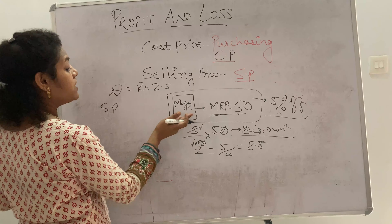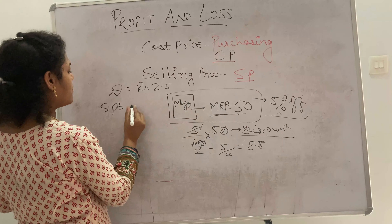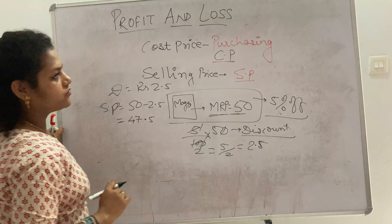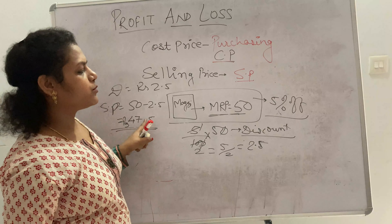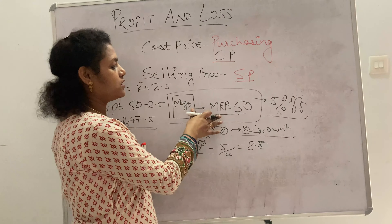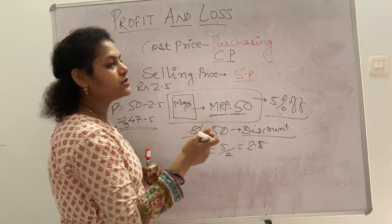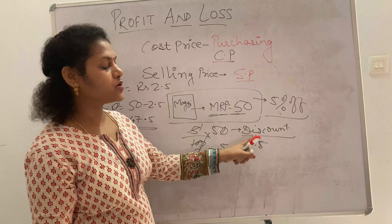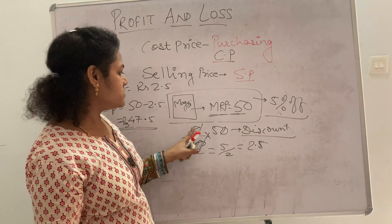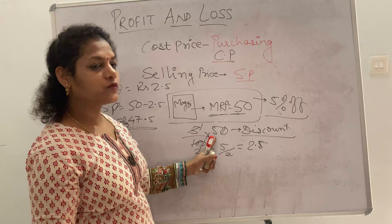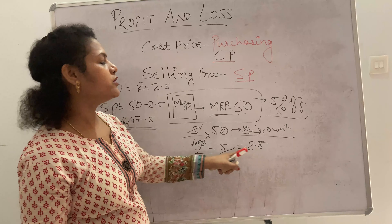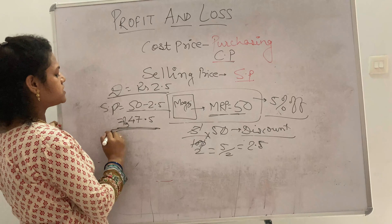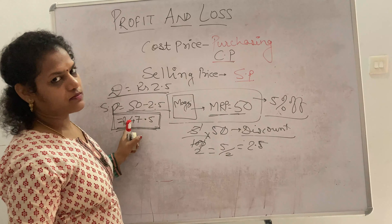So the discount is 2.5 rupees. The final selling price will be MRP minus discount, that is 50 minus 2.5 equals 47.5 rupees. That is what you pay for the Maggie packet. Whenever there is a discount on a product, first calculate the discount amount from the discount percent, then subtract it from the MRP to get the selling price.